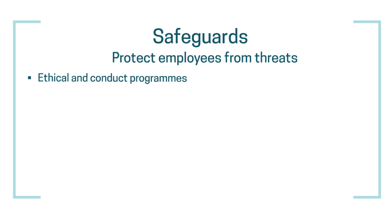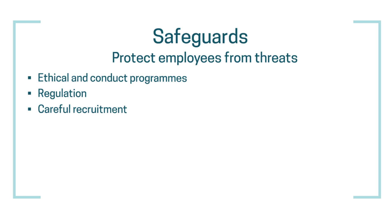Another safeguard is ensuring that the profession is adequately regulated — having in place comprehensive regulations and guidelines, setting out expectations, and also presenting the consequences that individuals will face if they behave unethically. Even before an individual is recruited, an organization can take steps to make sure that only the best candidates are able to work in the profession, thereby limiting the risk of unethical behavior occurring. So careful recruitment and thorough formal recruitment processes is another safeguard.